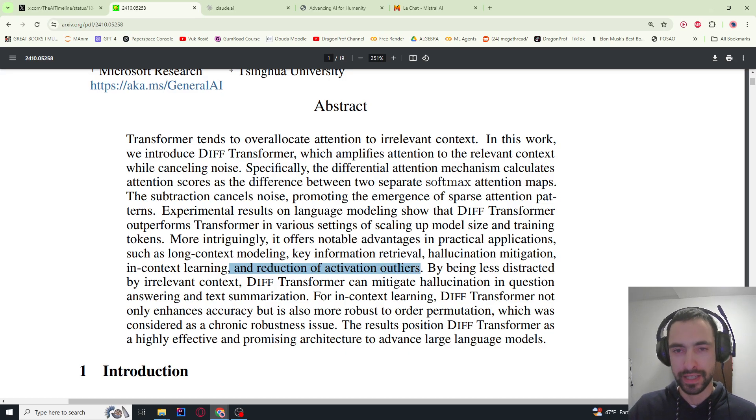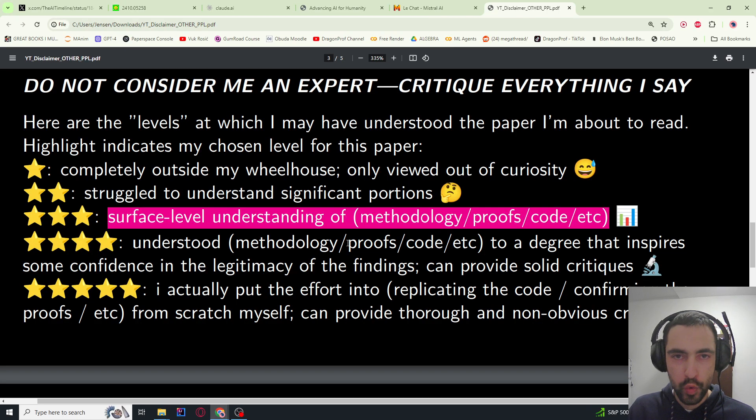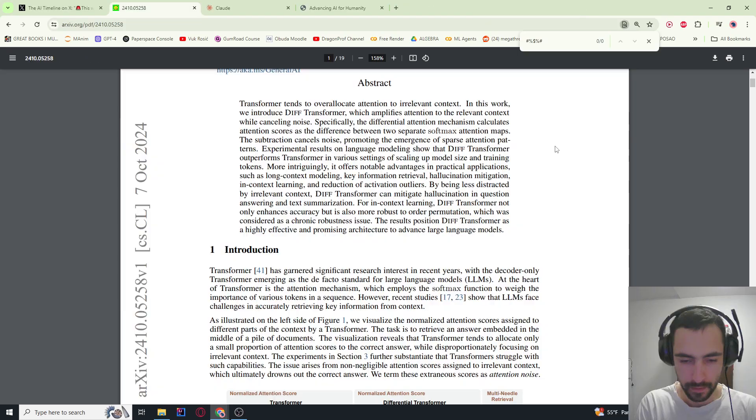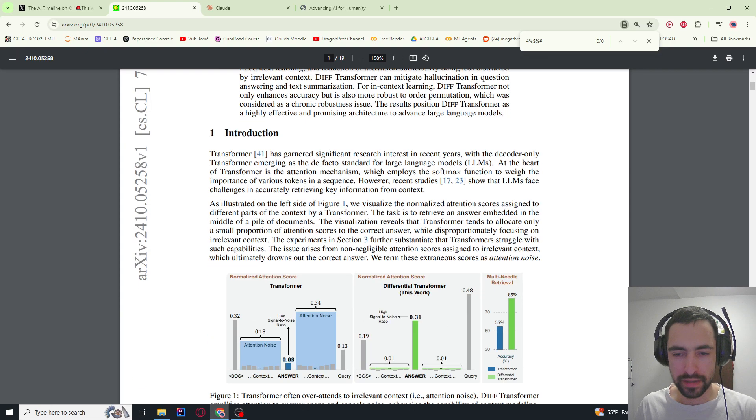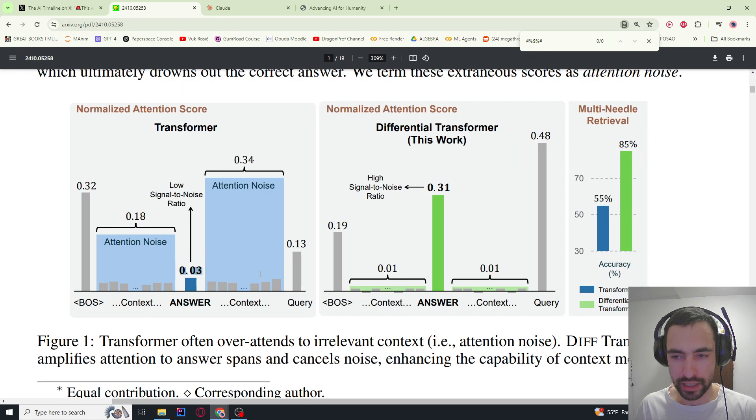It has better key information retrieval, hallucination mitigation, in-context learning, and reduction of activation outliers which helps in quantization. Quick disclaimer for my level of understanding: I understand methodology, proofs, code maybe even at level four here. So I want to scroll down immediately to this image, this important image to explain this.